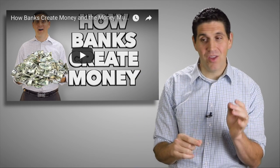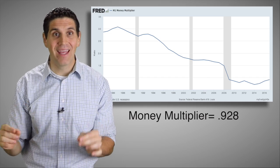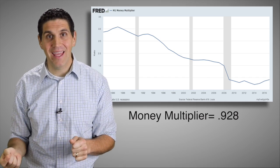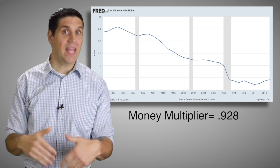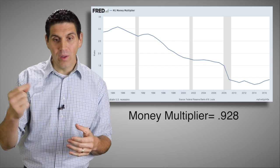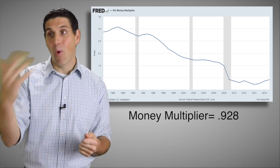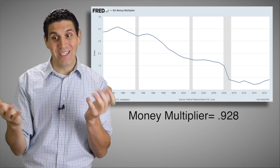That means the whole money multiplier you've learned from your teacher is actually totally out of whack. In reality, the money multiplier today is less than one. When the Fed increases the money supply by buying $100 worth of bonds, the only increase in money supply would actually be $93, not more than $100. Don't tell your teacher this, by the way, because it's going to mess up their assignments and the tests they're going to give you. We usually assume the money multiplier multiplies money, but that's not happening because the banks are holding it.